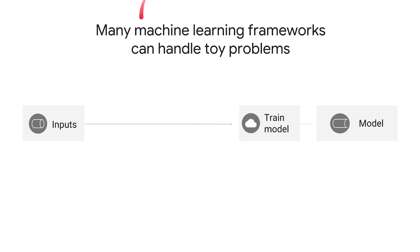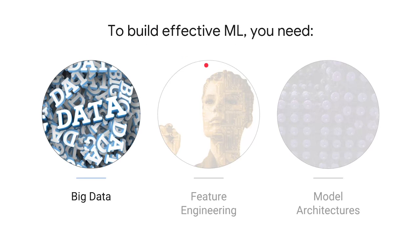Many machine learning frameworks can handle toy problems. But what are some of the important things to think about when it comes to building effective machine learning models? The first and most important thing is that you need to figure out a way to train the model on as much data as you can. Don't sample the data, don't aggregate the data — use as much data as you can.